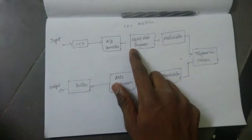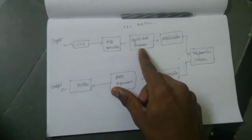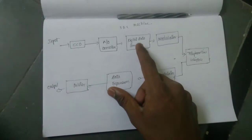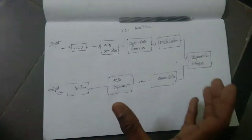The next block is the digital data compression block. This block takes the digital data and compresses it.